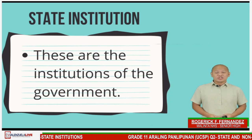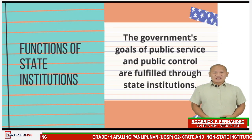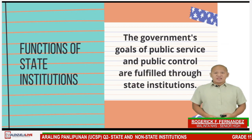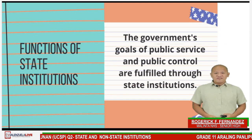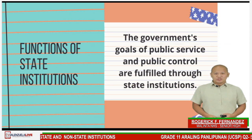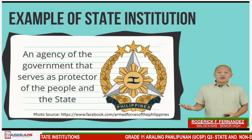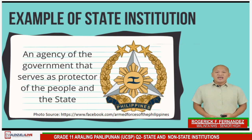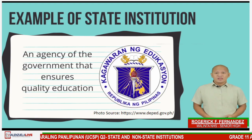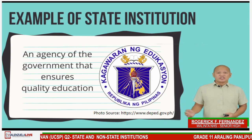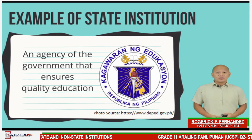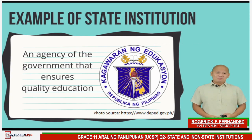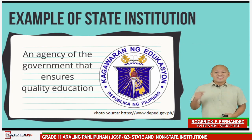State institutions are institutions of the government. Article 2, Section 4 of the 1987 Philippine Constitution states that the prime duty of the government is to serve and protect the people. The government's goals of public service and public control are fulfilled through state institutions. For example, the Armed Forces of the Philippines is the protector of the people and the state, and its goal is to secure the sovereignty of the state and the integrity of the national territory. Another example is the Department of Education, which protects and promotes the right of every Filipino to quality, equitable, culture-based, and complete basic education. Can you think of other examples of state institutions? You can type your answers in the chat box.